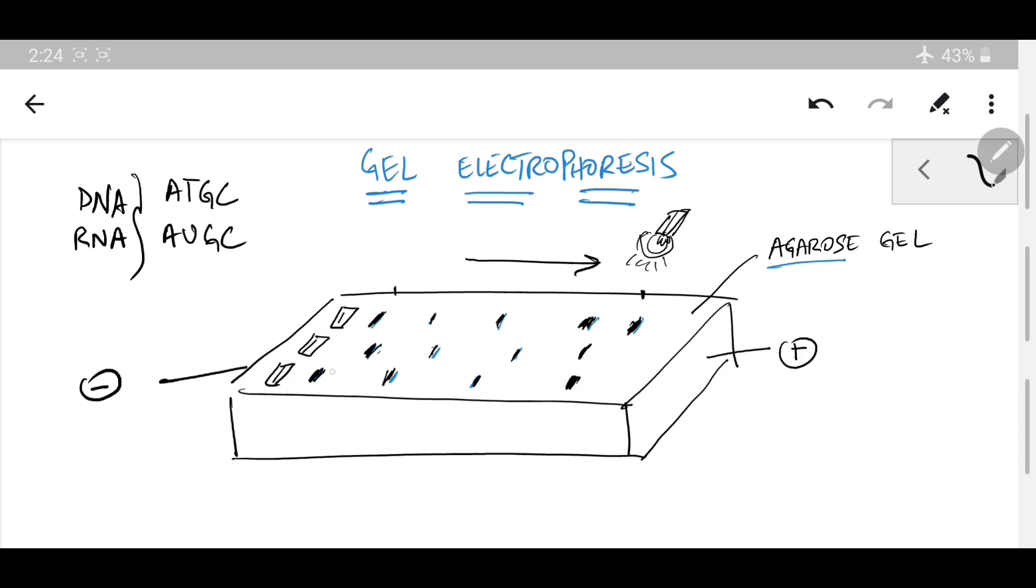So what we've done today is we've concluded that the separation is basically how much distance the fragments in a sample travel. And their distance is dependent on their size because of how the agarose gel is constructed. And once these base pairs identify themselves based on their size, we are able to compare them with a parent sample or another sample to see how much they match with each other.